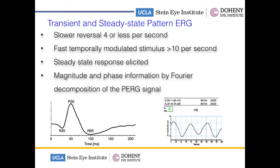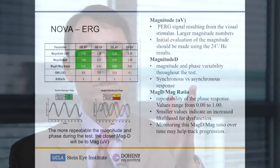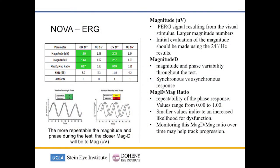Once this steady-state response is elicited, you can get information on both the magnitude, like you did in the transient, but also on the phase information and phase shift. That is gathered by Fourier decomposition of the PERG signal. So how does this dovetail with office-based electrophysiology by NOVA ERG? Here are a couple examples of what the printout looks like when you get this on a patient. You can see right here we have the magnitude, the magnitude D, and then the mag D to mag ratio.